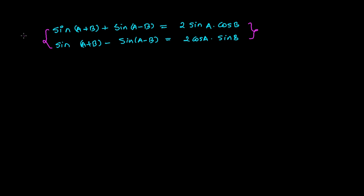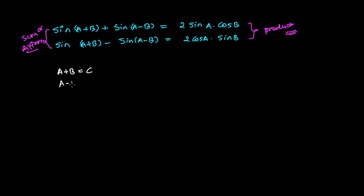So this is in sum or difference form. And now we're going to derive the formula to convert into the product form. The previous video, we had just done the opposite of this. For this, I'm supposing if a plus b is equal to c and a minus b is equal to d.